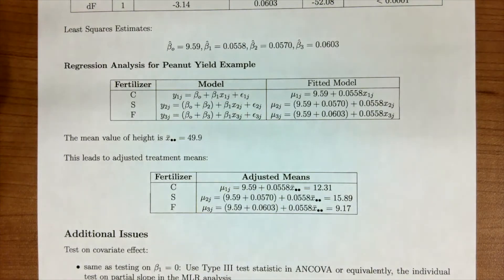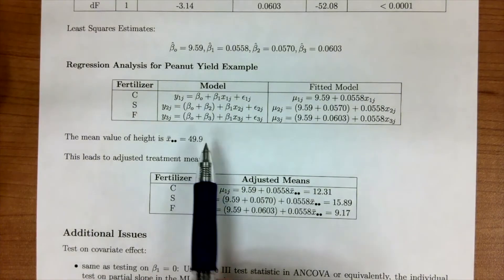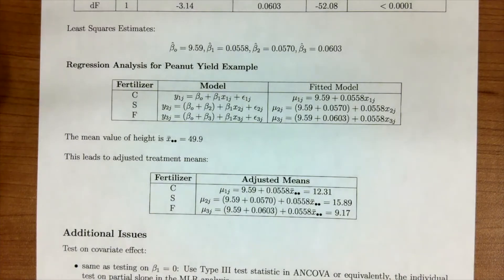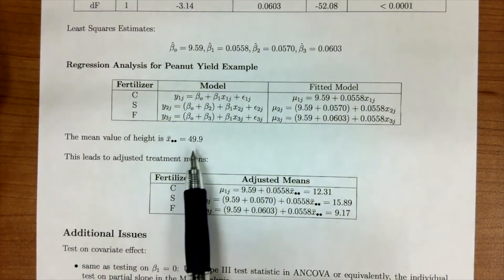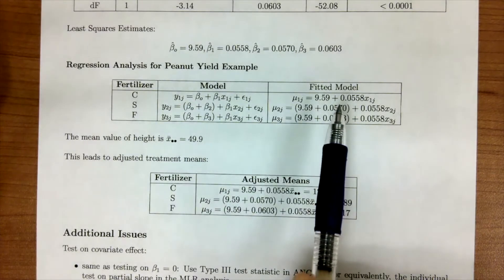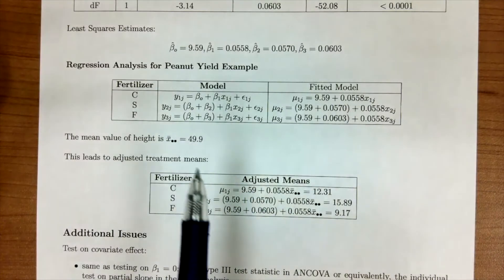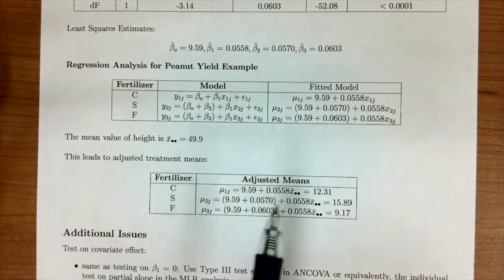Now, if I told y'all the mean of the height is 49.9, this is going to help us get to our adjusted treatment means. And so what happens is, is we're going to take our overall height and we're going to plug it into our fitted models and we're now going to get our adjusted treatment means. And so that's why our adjusted treatment means are going to be different than just taking the average of fertilizer C or fertilizer F or fertilizer S. We're trying to adjust for that starting plant height.